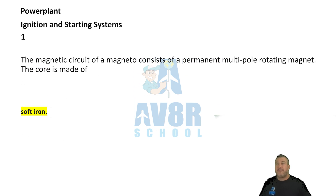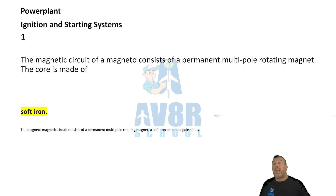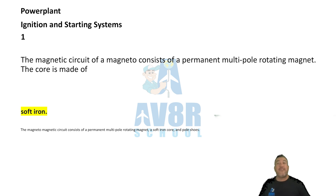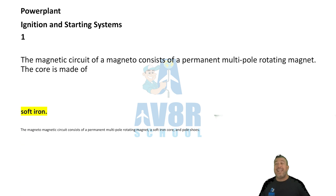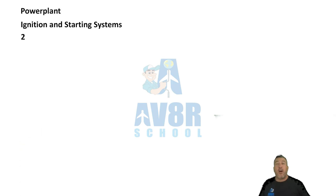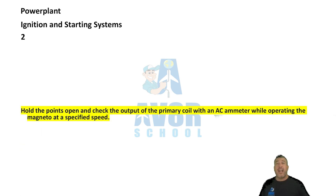Question number one: Soft iron. The magnetic circuit of a magneto consists of a permanent multipole rotating magnet. The core is made of soft iron.